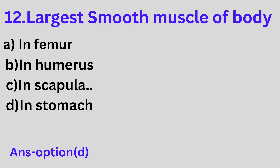Question 12: The largest smooth muscle of the body is found A. In femur, B. In humerus, C. In scapula, D. In stomach. Option D is the correct answer. The largest smooth muscle of the body is in the stomach.